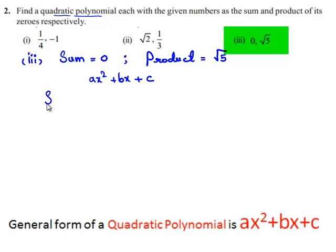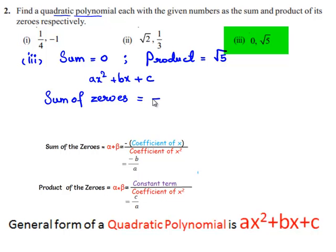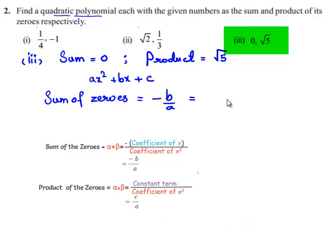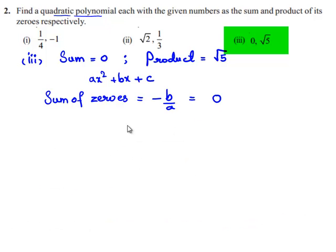We know that the sum of the zeros is equal to minus b by a, and the given sum of the zeros is equal to 0. So we can write 0 as 0 by 1.